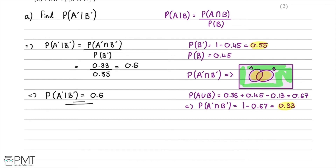This question was worth two marks. We receive our first mark for knowing to use the formula and reaching the stage of 0.33 over 0.55, and our second mark for getting the correct answer of 0.6.